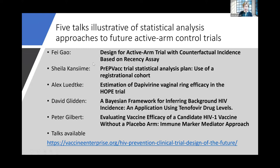We have five panelists with us today. Faye is talking about how we might design a trial that used recency assays to estimate HIV incidence. Sheila is talking about a setting currently in the field using a registrational cohort to get a handle on HIV incidence. Alex, Dave, and Peter all talked about methods of bridging from prior placebo-controlled trials to future active control trials — Alex in the context of vaginal rings, Dave in the context of Truvada for prevention, and Peter in the future context for vaccines.